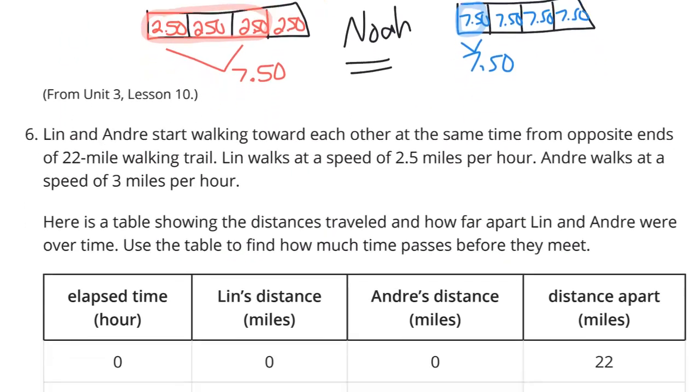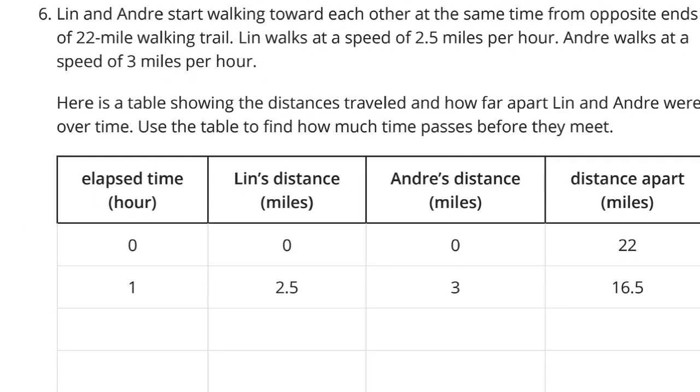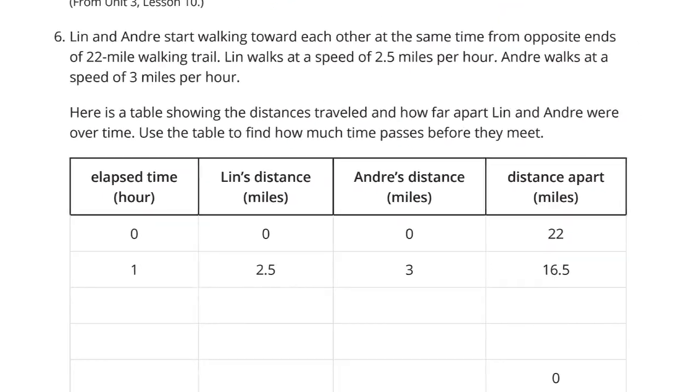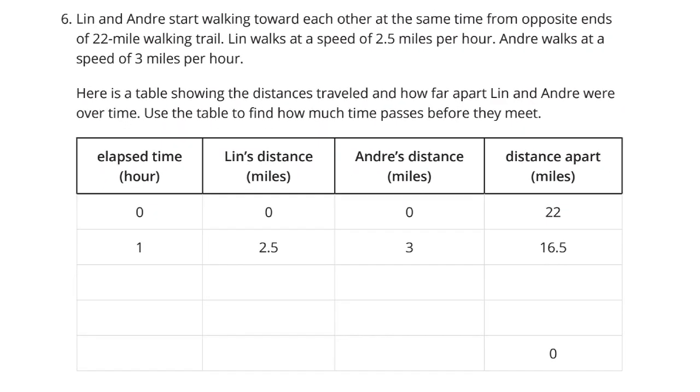Question six. Lynn and Andre start walking towards each other at the same time from opposite ends of a 22-mile walking trail. Lynn walks at a speed of 2.5 miles per hour. Andre walks at a speed of 3 miles per hour. Here's a table showing the distances traveled and how far apart Lynn and Andre were over time. Use the table to find how much time passes before they meet.